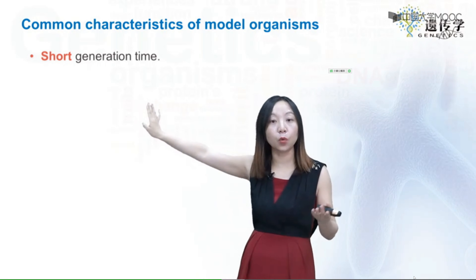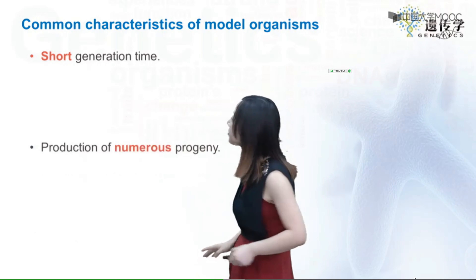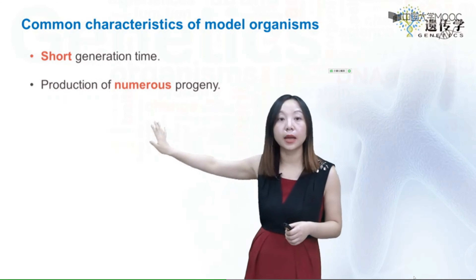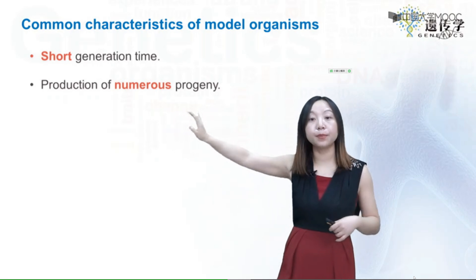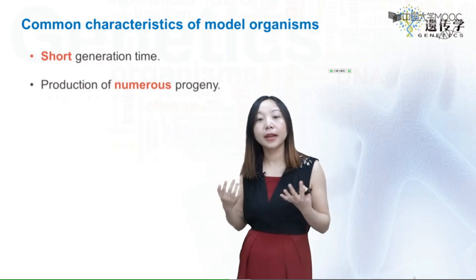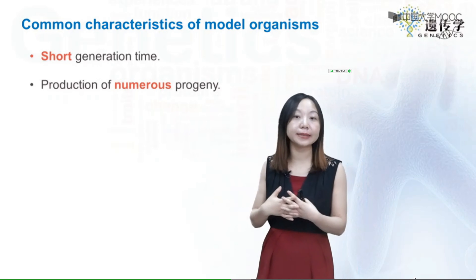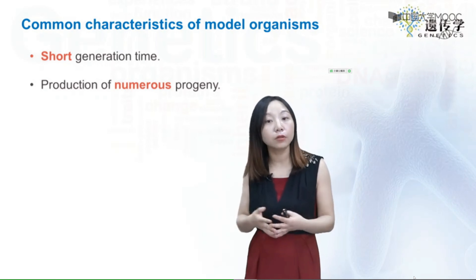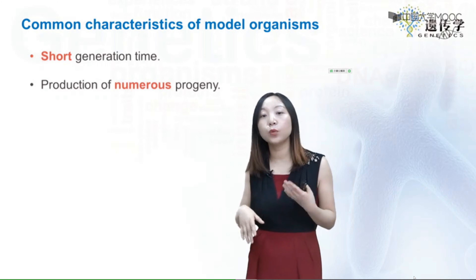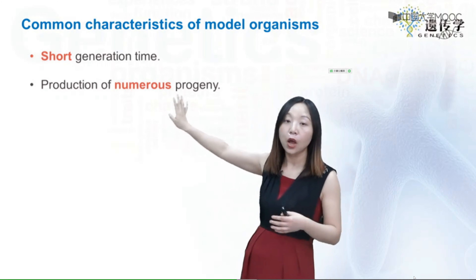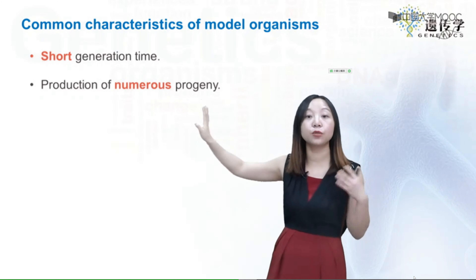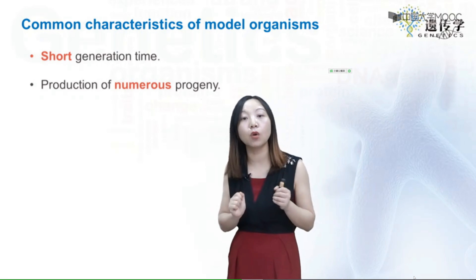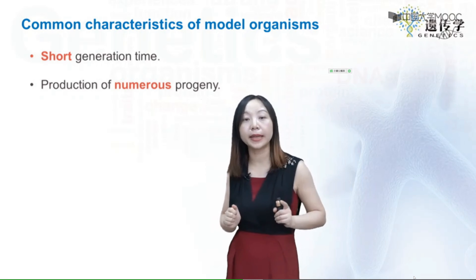Second, model organisms need to be able to produce numerous progeny. When we analyze offspring, chance plays an important role in the outcome of genetic crosses, and only when we have numerous progeny can we apply statistical methods to analyze the results. So we want an organism that produces numerous progeny in every single cross.